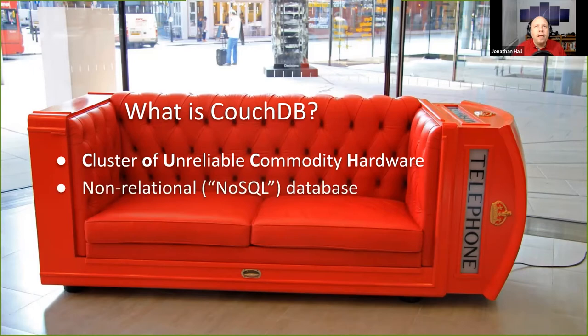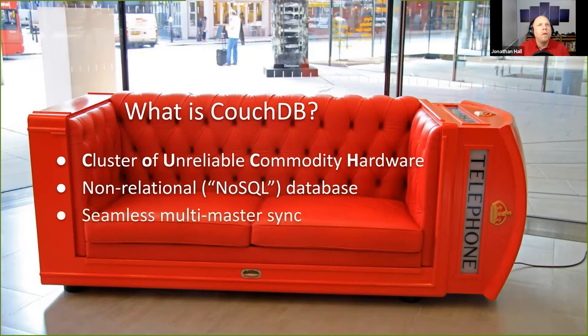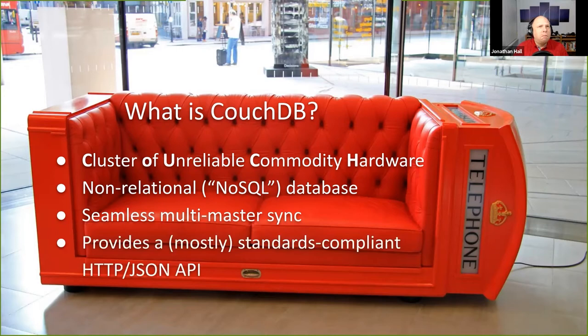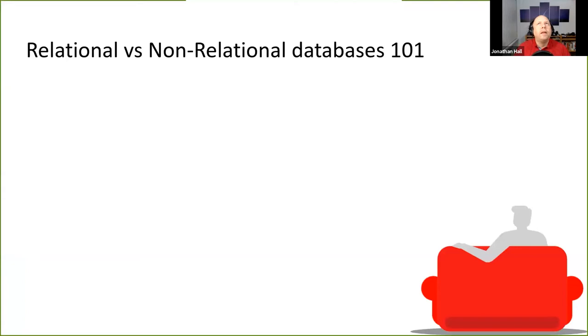At a higher level, CouchDB is a non-relational — or NoSQL — database. I really dislike that term because you can actually use SQL to query CouchDB if you want, but it's not relational. Rather than columns and rows, you have documents of arbitrary JSON data. CouchDB offers seamless multi-master sync, which is its killer feature. It also provides a mostly standards-compliant HTTP JSON REST-ish API, which makes it easy to program against — which means the Go SDK I wrote isn't actually that interesting; it's just a fancy front end over some REST calls.